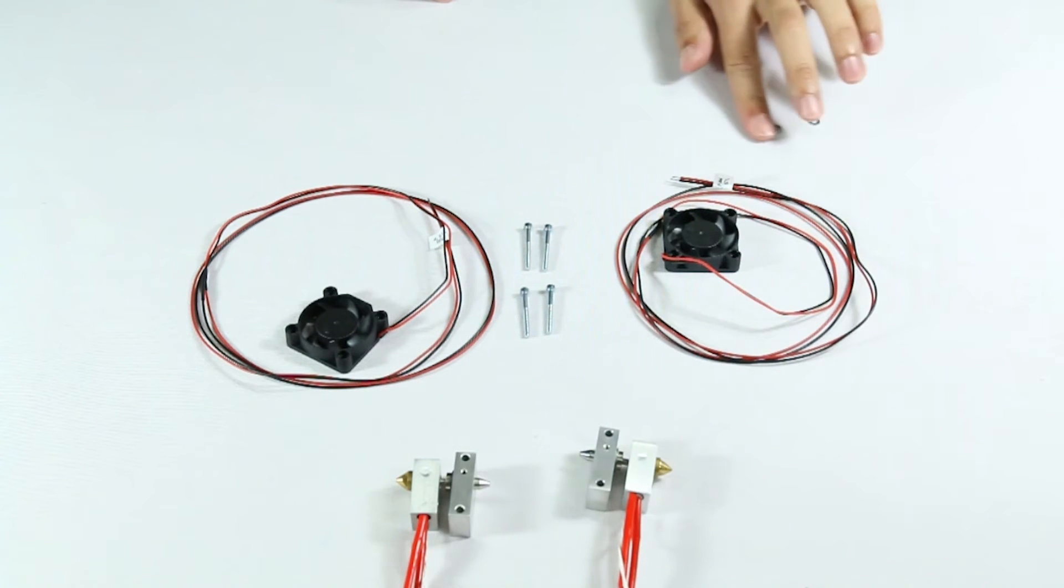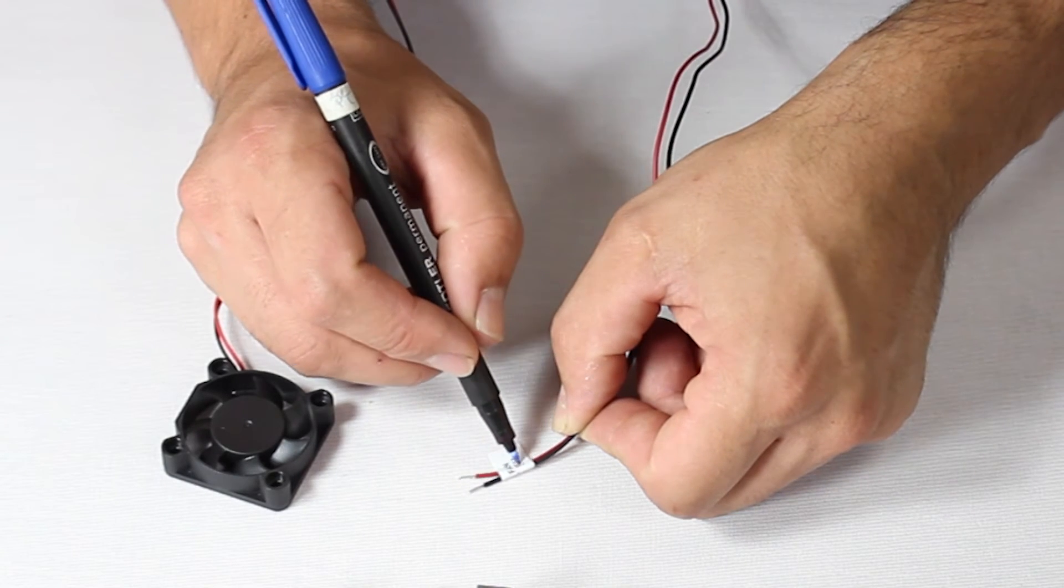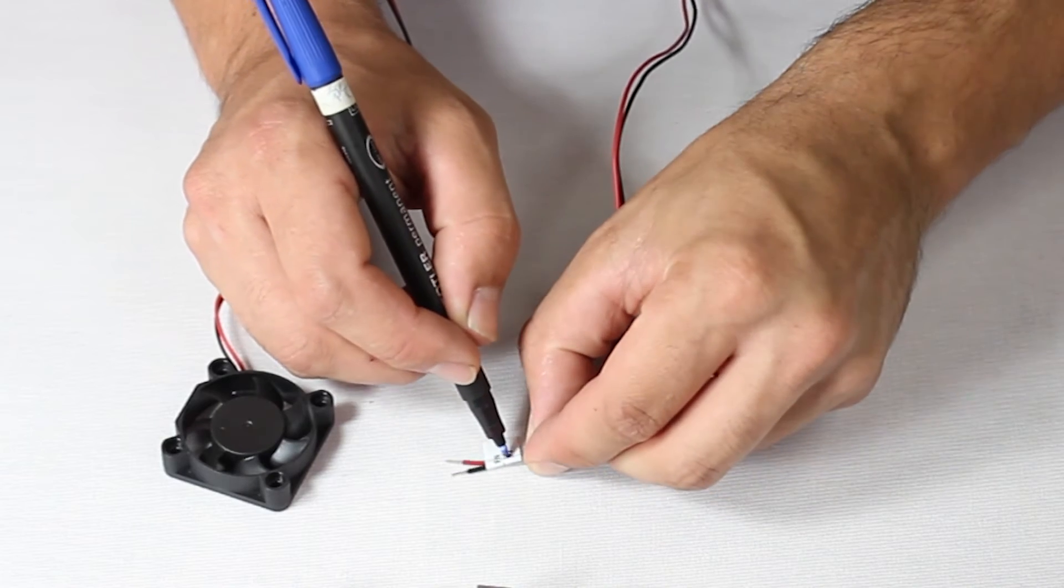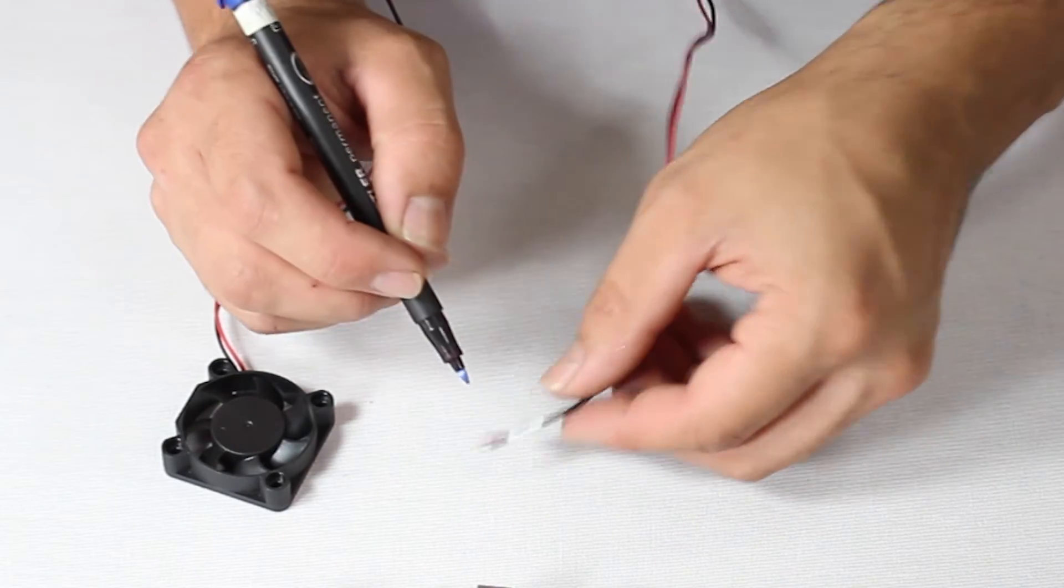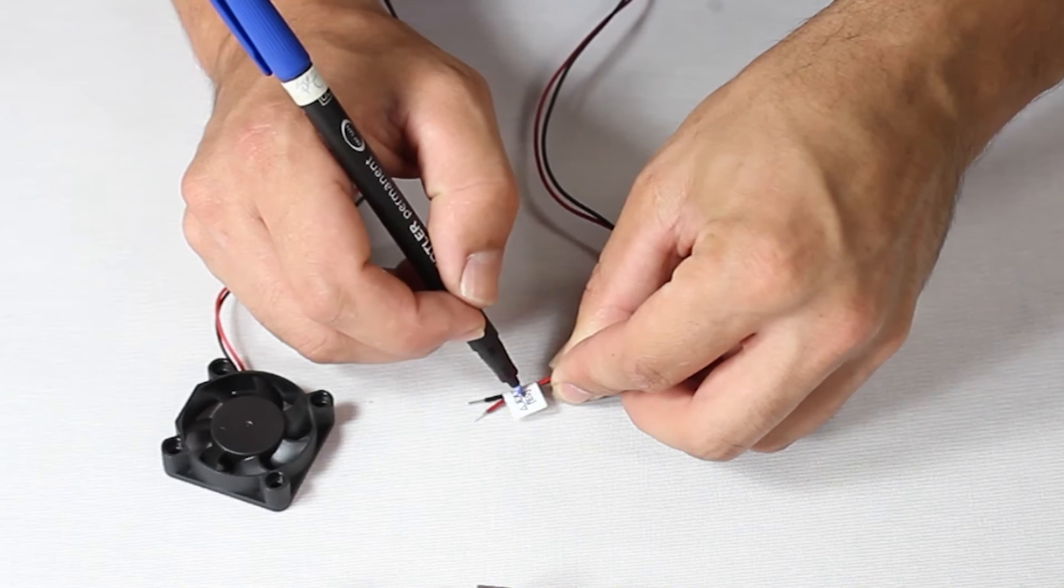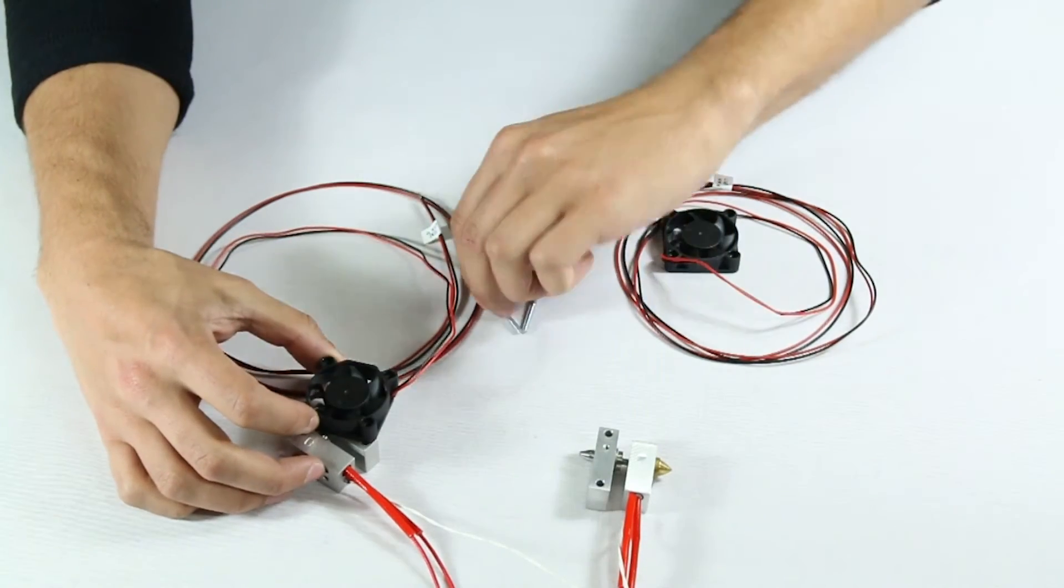With this done, we move on to the extruder fans. For now, we need two, and again, we clearly mark the labels of each. One with a 0, the other with a 1. We remind you, all the components marked with a 0 go together, and all with a 1 go together. Don't get them mixed up.